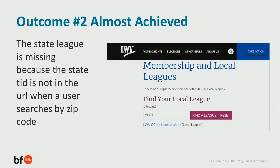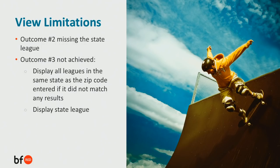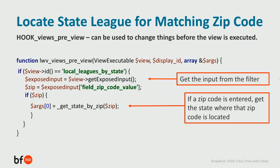So we achieved outcome number one. Outcome number two is almost achieved — a user can search by zip code and find their matching local league, but what's missing is the state league, because we're at a URL that doesn't include the state term ID when the user inputs the zip code value. Also, we haven't achieved any part of outcome three: when a user enters a zip code but there isn't a matching local league, we want it to display all local leagues in the same state. This is where we get into the more complex things.